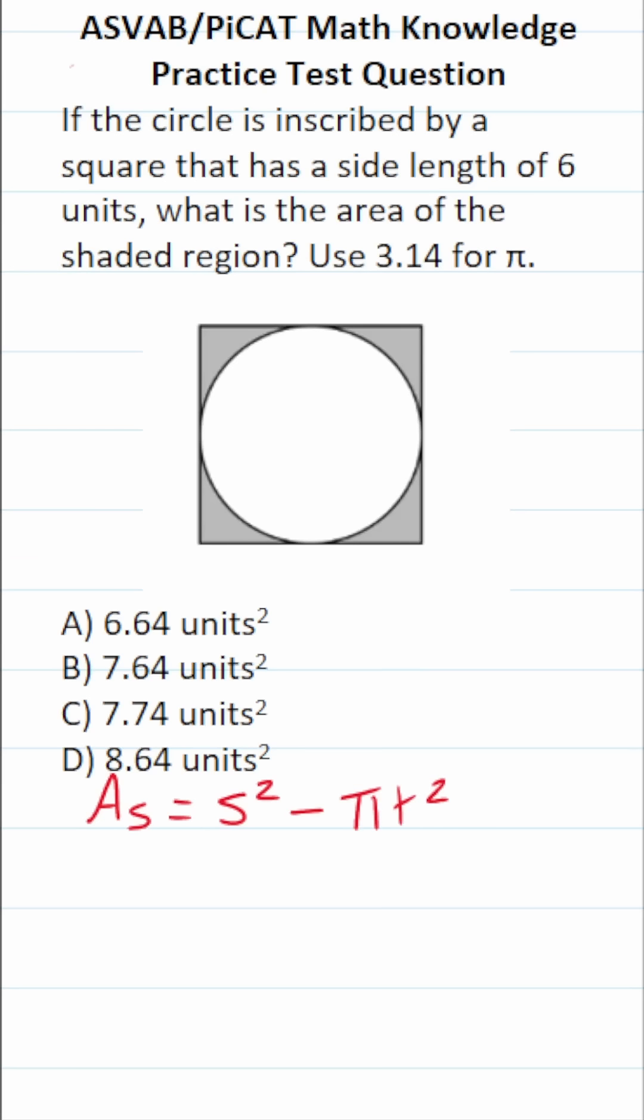Again, since you're not permitted to use a calculator or a reference sheet on the ASVAB or PiCAT, you do have to commit both of these formulas to memory. Now, according to the problem, we know the side length of this square is 6 units, so s, in other words, is 6. Let's go ahead and plug that in.